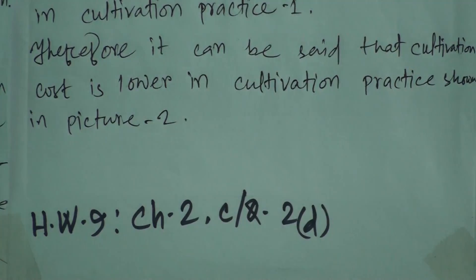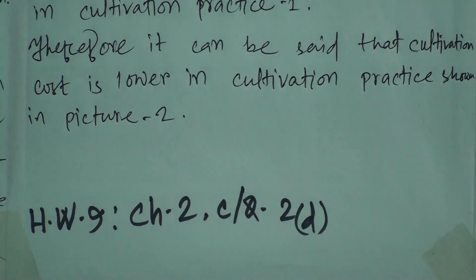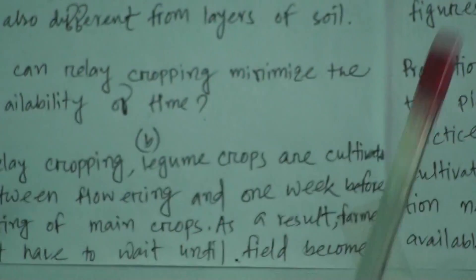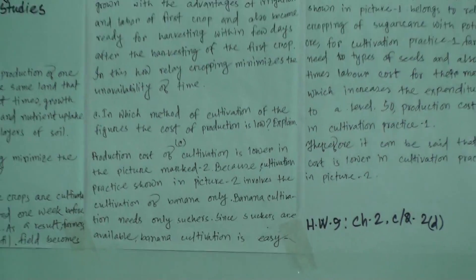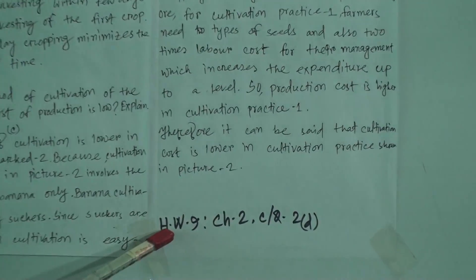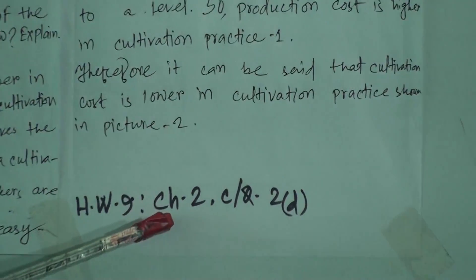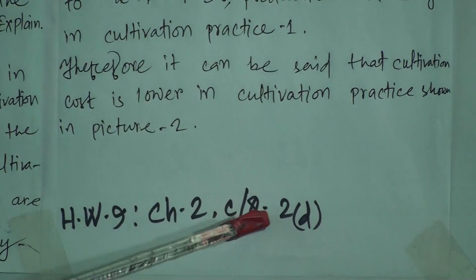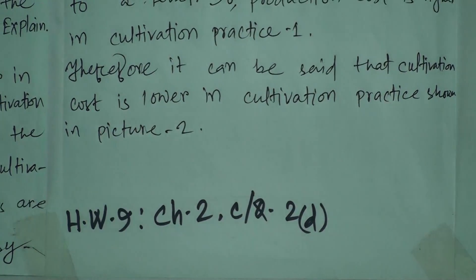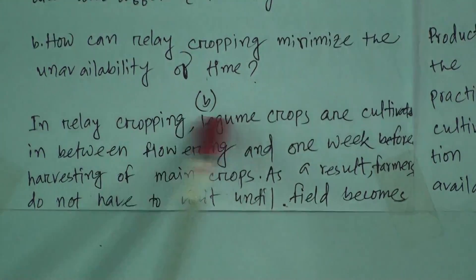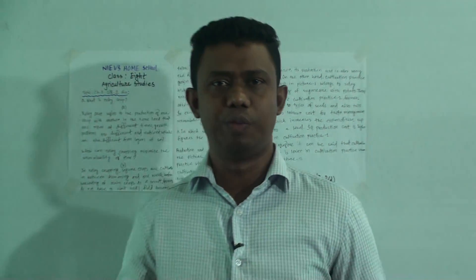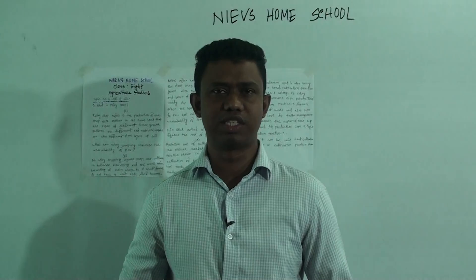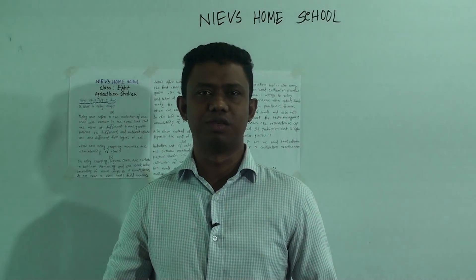Dear students, for number D, if you review the answers of B and C, you will be able to write the answer of question number D. You have homework: chapter 2, creative question number 2, part D. I have not written it — this is your assignment, and you will be able to write it using the answers from B and C. This is the end of the class. I hope you all have understood today's class. Assalamualaikum warahmatullahi wabarakatuh.